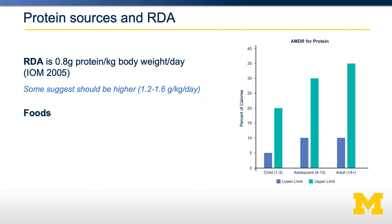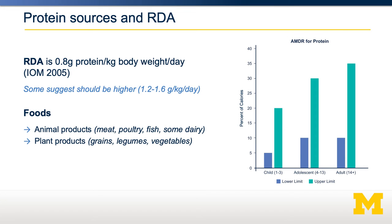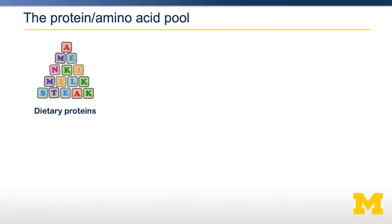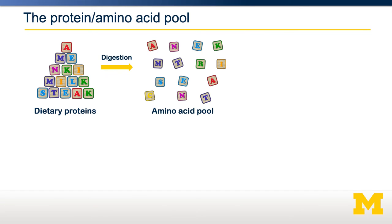Proteins can be found in a whole variety of food sources, including animal products such as meat, plant products such as beans, and as supplements such as whey protein. When proteins exist in our bodies, they exist in an equilibrium where they can be existing in our body proteins or broken down into free amino acids. When proteins are digested, they're also broken down into free amino acids.